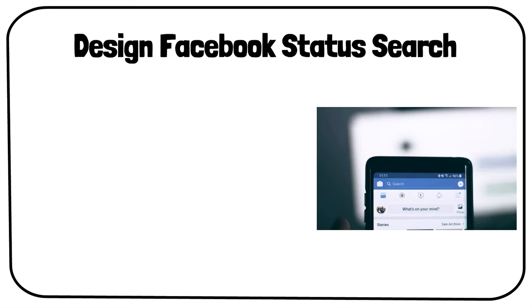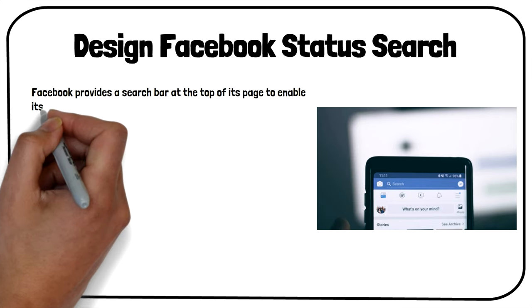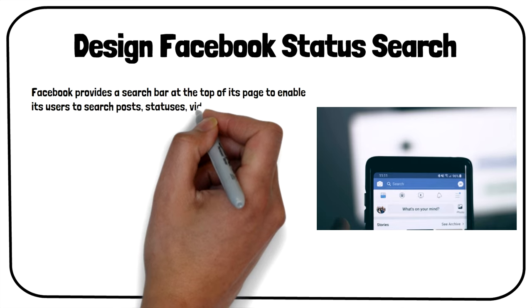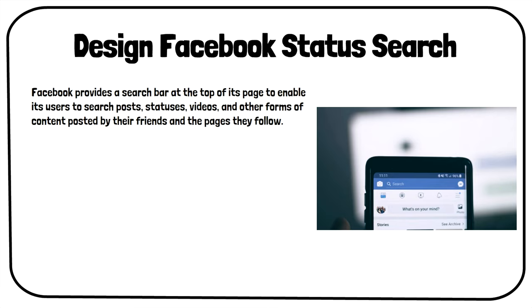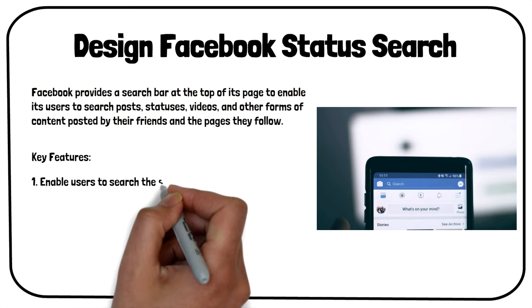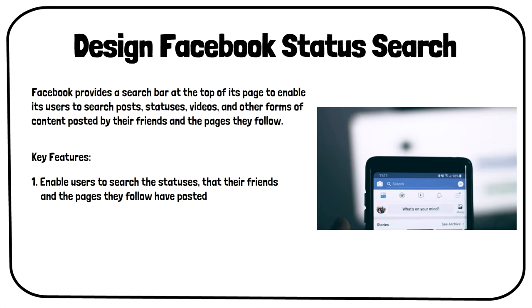Design Facebook Status Search is also one of the popular system design interview questions. Facebook provides a search bar at the top of its page to enable its users to search posts, statuses, videos, and other forms of content posted by their friends and the pages they follow. Given that it will be a 45-minute interview round, we will be designing a system with a lower feature set. In this question, we will be asked to develop the backend of a system that will enable users to search the statuses that their friends and the pages they follow have posted on Facebook. We can consider that these statuses will only contain text for this particular question.